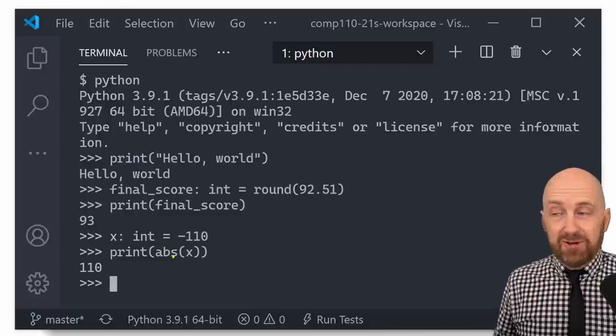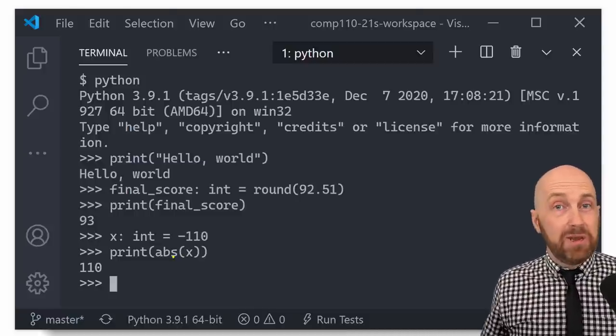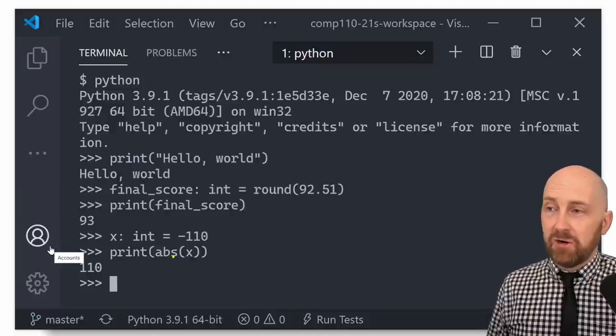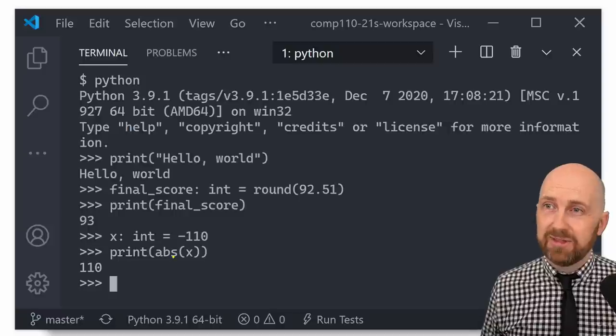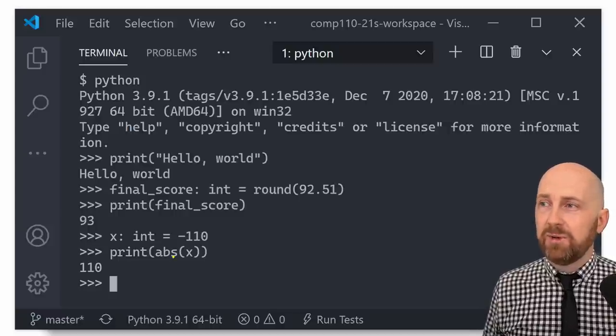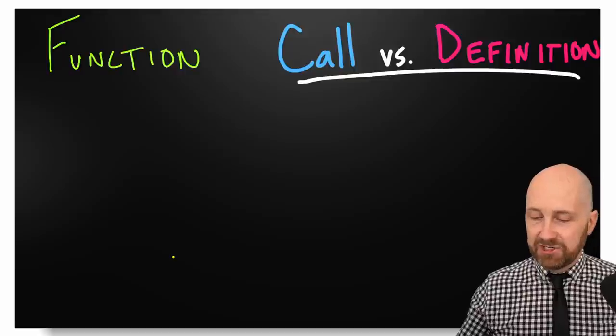So abs and round are functions. So is print and there are many more, right? So here we're seeing function calls. We haven't yet seen a function definition and we won't see one until the next lesson, but let's talk a little bit more about the difference between calls and definitions.